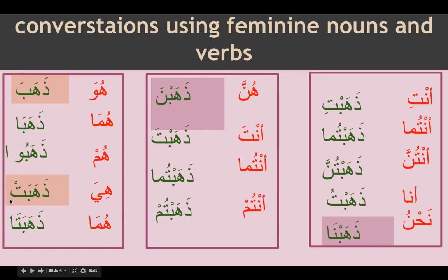For zahabat, we look for the fa'il because it is detached — this ta is tau tanith. In all other forms, the fa'il is attached to the verb, so we do not need to look for it separately. We know the fa'il is a pronoun, so we look for the main subject that this pronoun is representing in the sentence or paragraph.